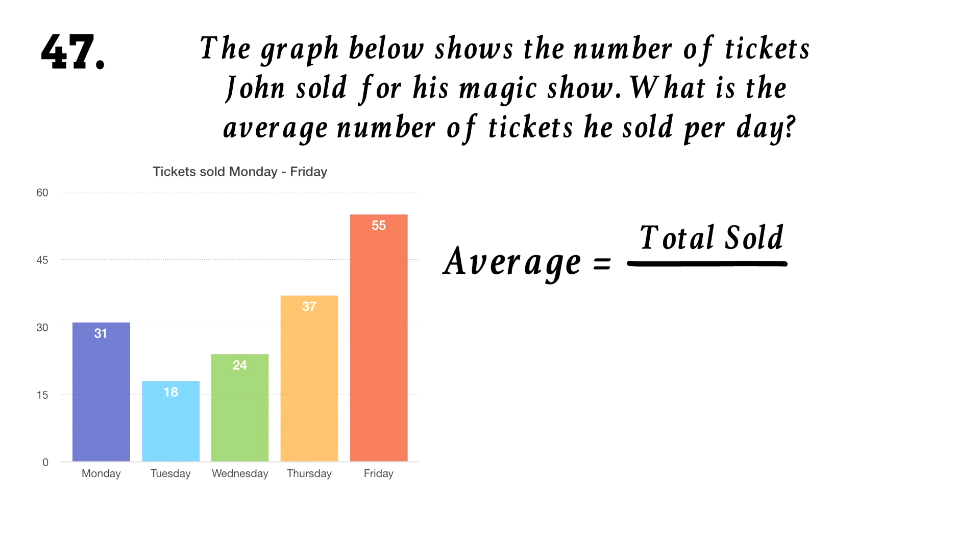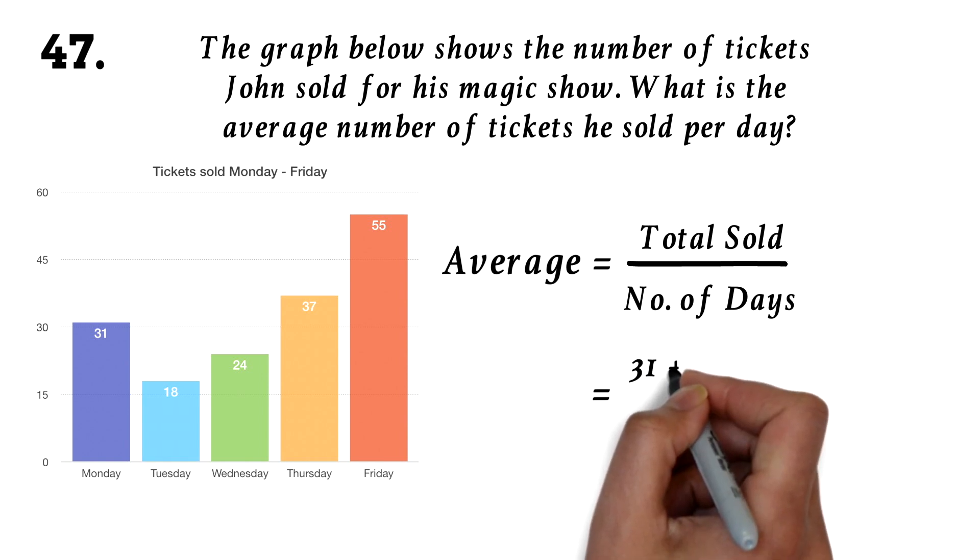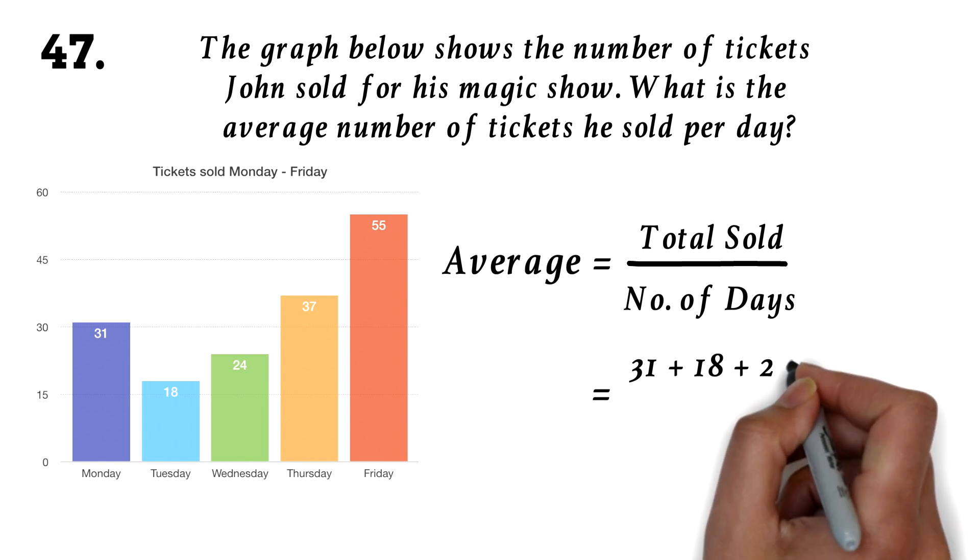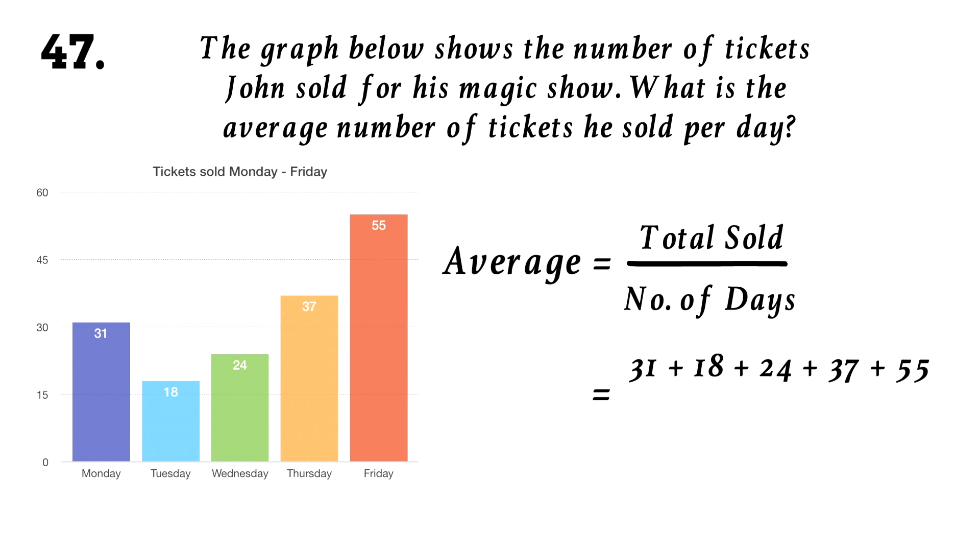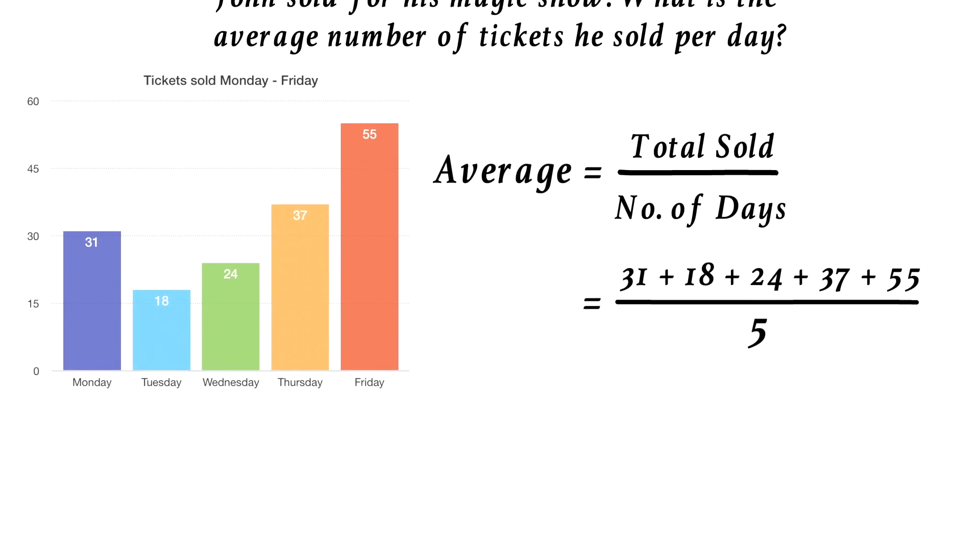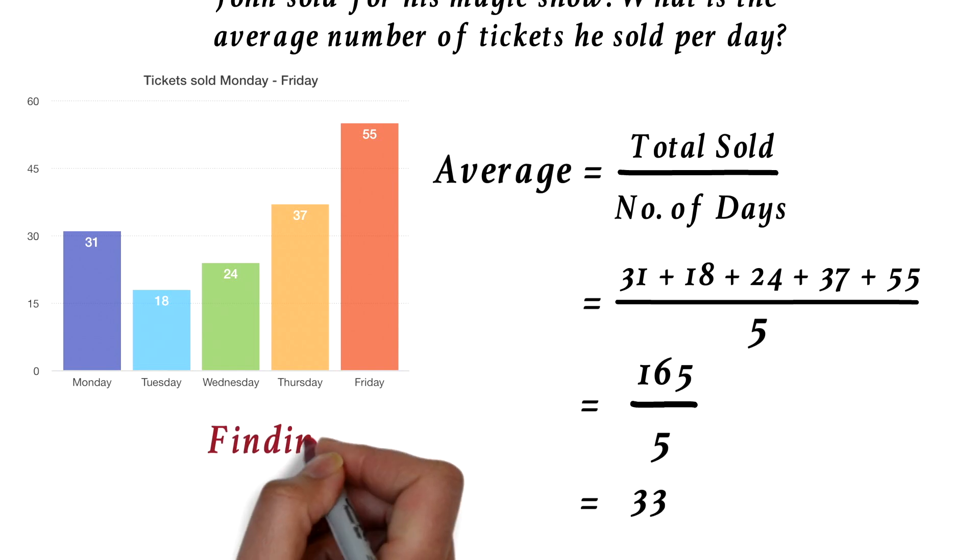Average is the total sold over number of days. We will add all the tickets sold. We have 31 plus 18 plus 24 plus 37 plus 55 divided by the number of days, which is 5. So we have 165 divided by 5. This will give us 33 as the average. The first kind of common chart question is being asked to find the mean, which is the same as the average, the mode, and median.